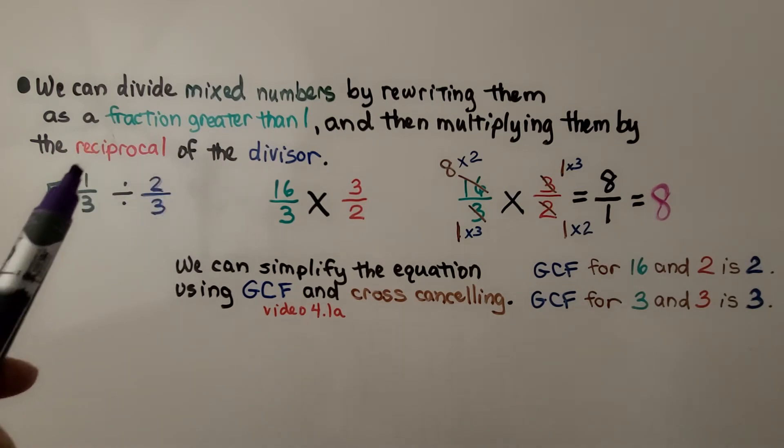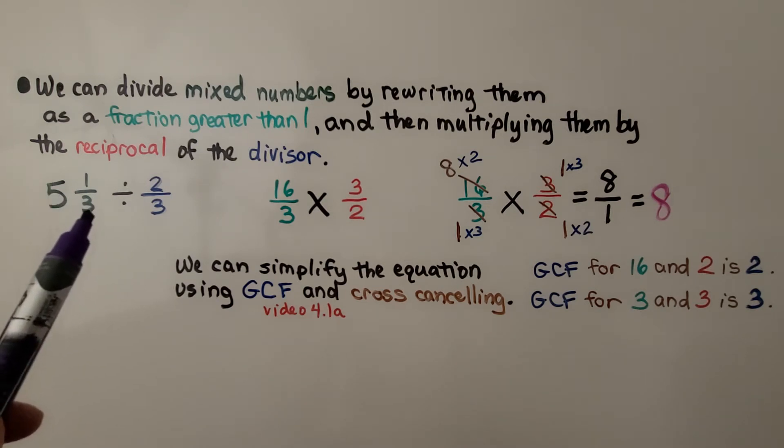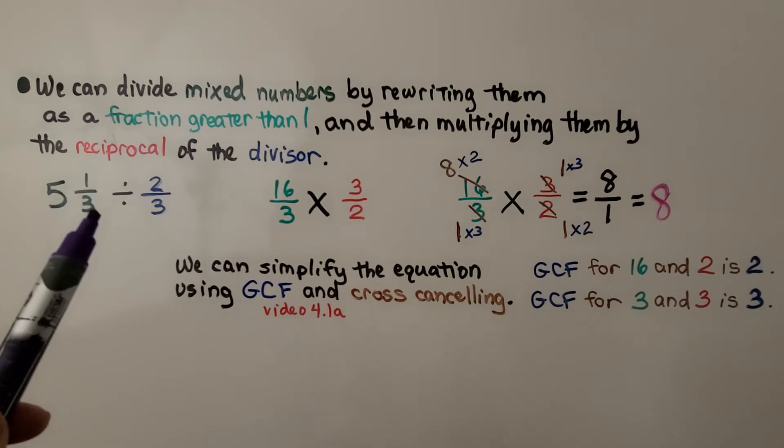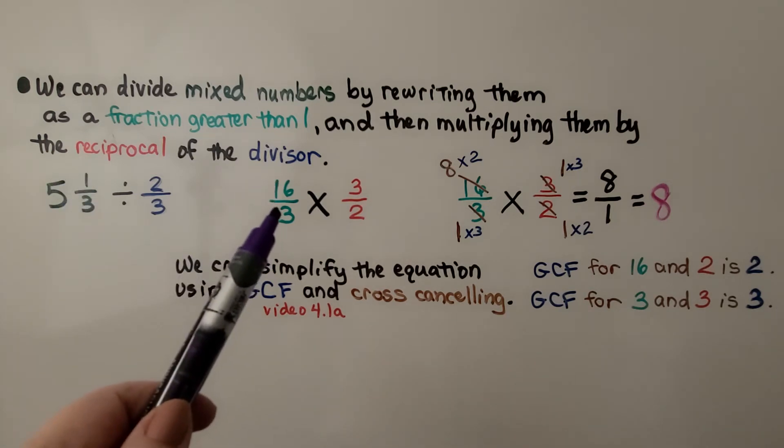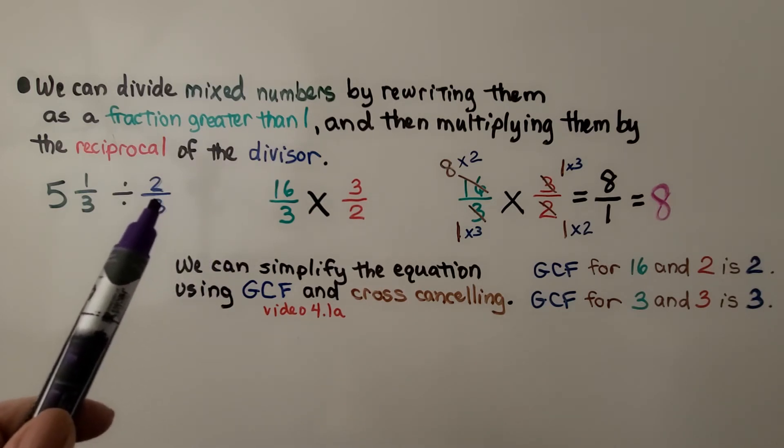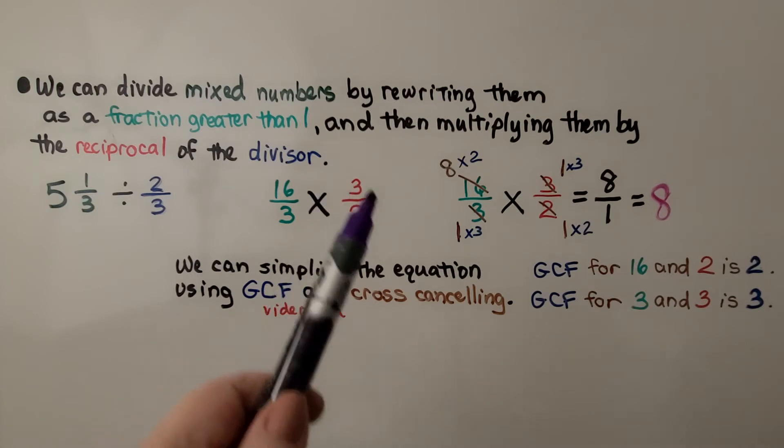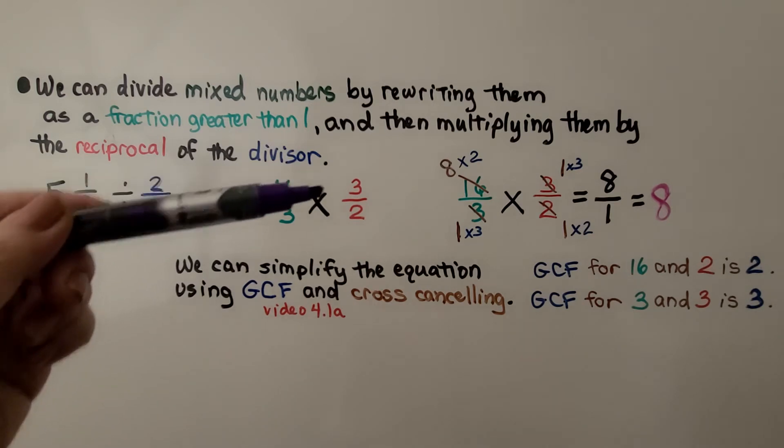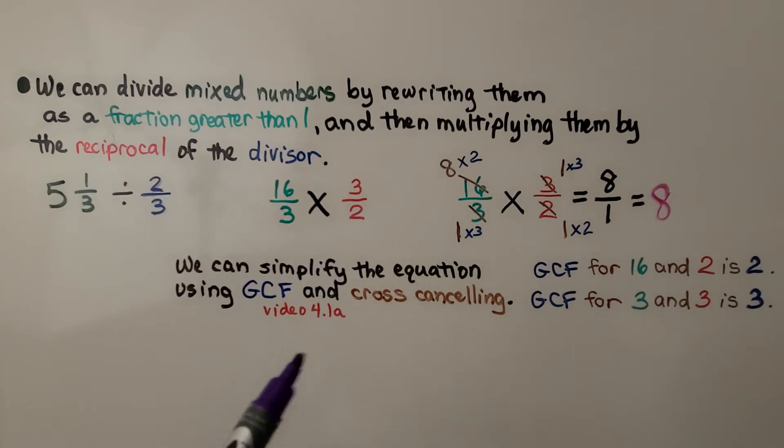We write 5⅓ as a fraction greater than one. We do 5 times the denominator 3, that's 15, and we add the numerator, that's 16, and we use that denominator, so we have 16/3. Then we multiply it by the reciprocal of the divisor, and since that's ⅔, the reciprocal is 3/2.